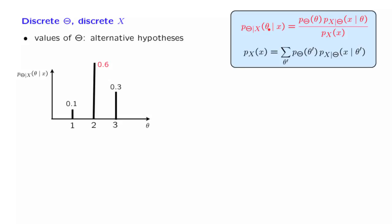As a concrete example, suppose that theta can take values 1, 2, or 3. We have obtained our observation, and the conditional PMF takes this form.